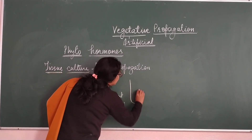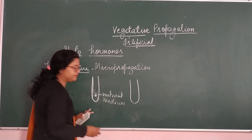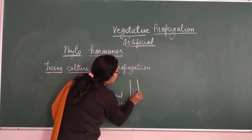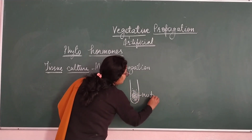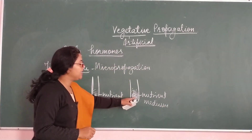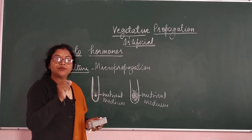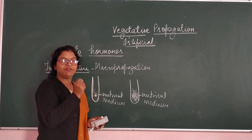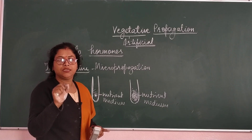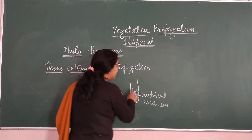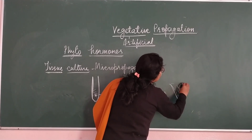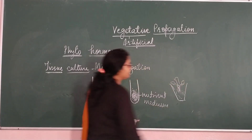After some time, the tissue starts growing and dividing, and it becomes a callous. This callous is then transferred to another glass tube, where it becomes a shoot. With the phytohormones in the nutrient medium, a shoot develops in a very short period of time and leaves start growing. Finally it is removed and converted into a plantlet, which is then placed in soil for natural growth.